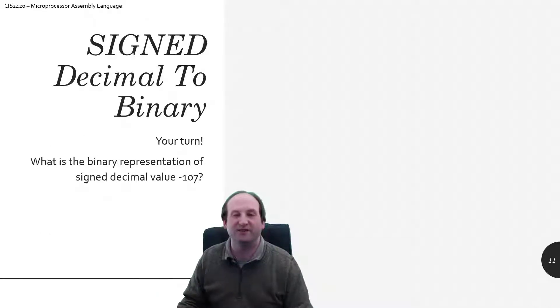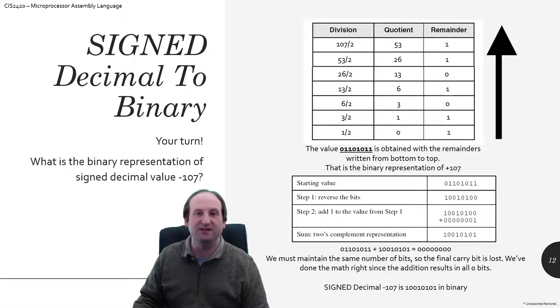So what about negative 107? If I'm dealing with a signed decimal number and I tell you, hey, convert that into binary, it's your turn. What do you think? I have a signed number in front of me and I see a negative sign on top of that, so I know I have to use two's complement somewhere along the line to solve this problem.